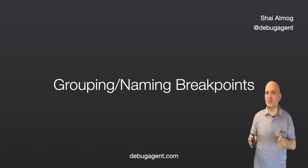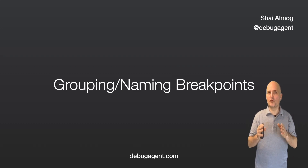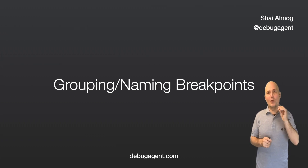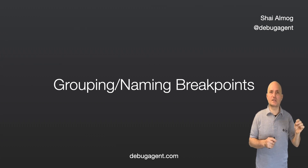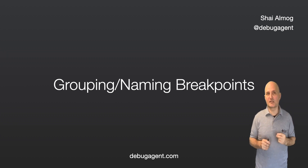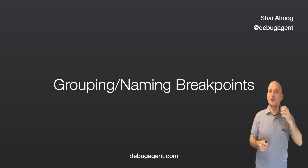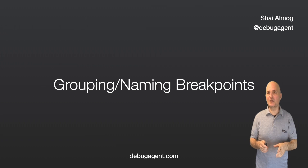We can manage breakpoints, name, group, and disable them as a hierarchy group. When dealing with multiple tasks and switching branches in the middle of a debugging session, we can keep that session on hold by grouping all the breakpoints together. When we return to the task, we can instantly jump right back.